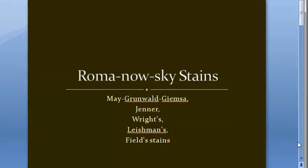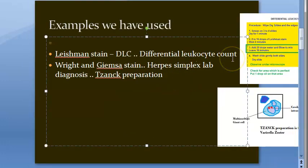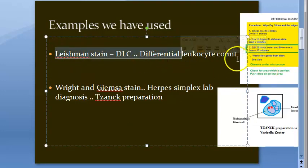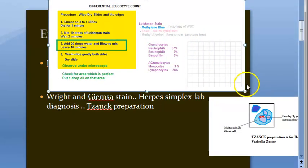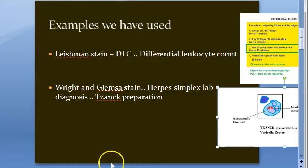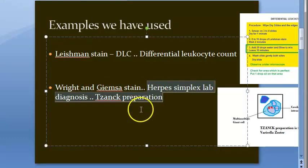Amongst these, the ones we have actually used: Lishman stain — you remember for DLC, differential leukocyte count in physiology lab, putting up those hundred squares and counting neutrophils, eosinophils, basophils. Then Wright-Giemsa stain, which we studied for herpes simplex lab diagnosis — the Tzanck preparation.